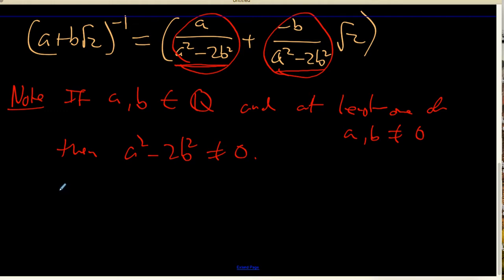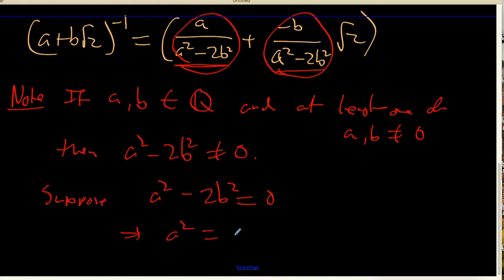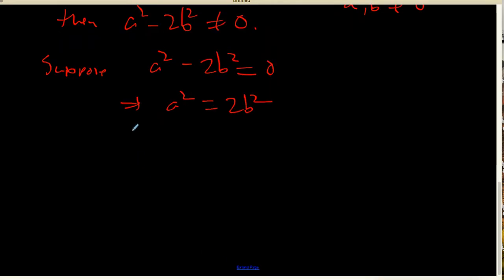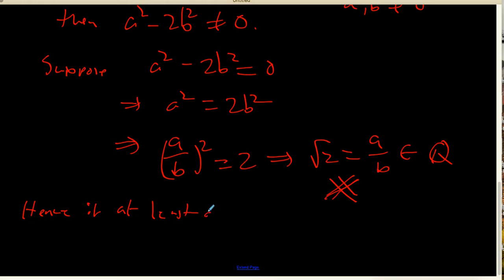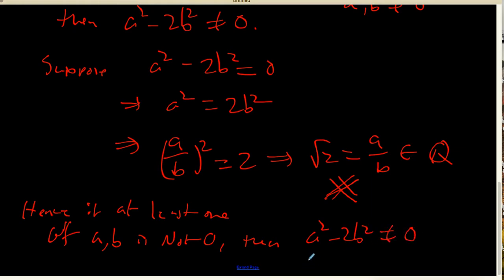Suppose a squared minus 2b squared equals 0. That's going to say that a squared equals 2b squared, which says that a over b, quantity squared, equals 2 — which would say that the square root of 2 is a over b, and a over b is a rational number. But we all know that the square root of 2 is not rational, so there is our contradiction. Hence, if at least one of a and b is not 0, then a squared minus 2b squared is not going to be 0 when a and b are both rational numbers.